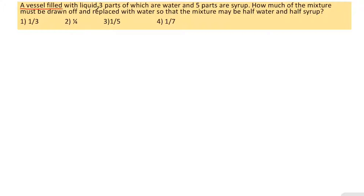A vessel filled with liquid, three parts of which are water and five parts are syrup. How much of the mixture must be drawn off and replaced with water, so that the mixture may be half water and half syrup?